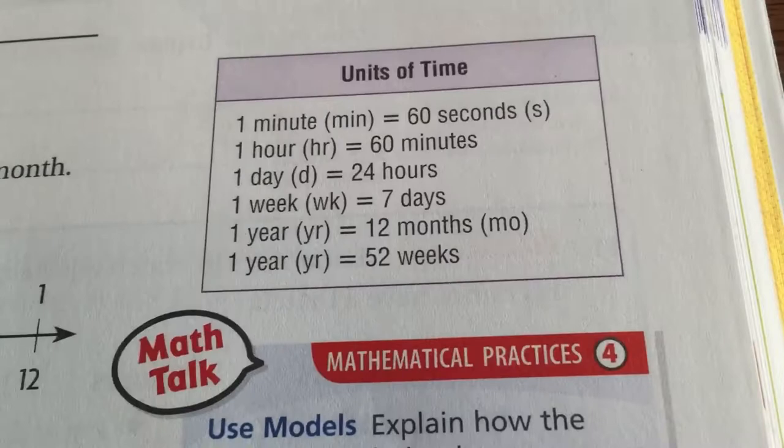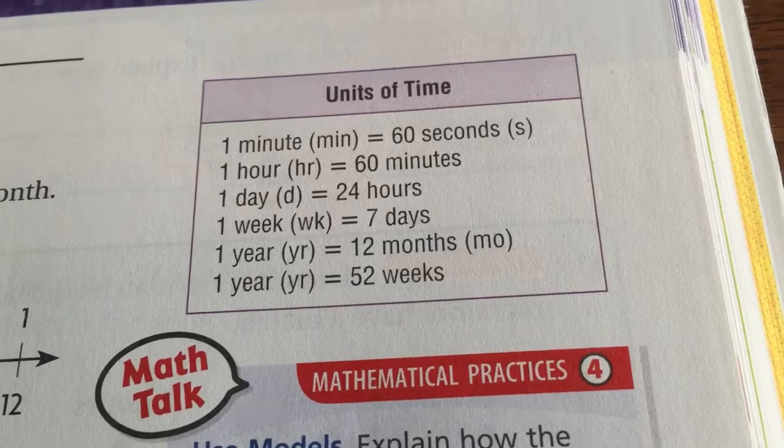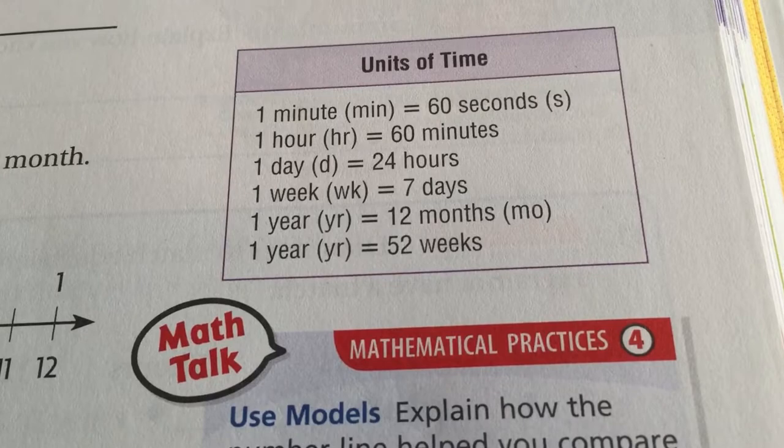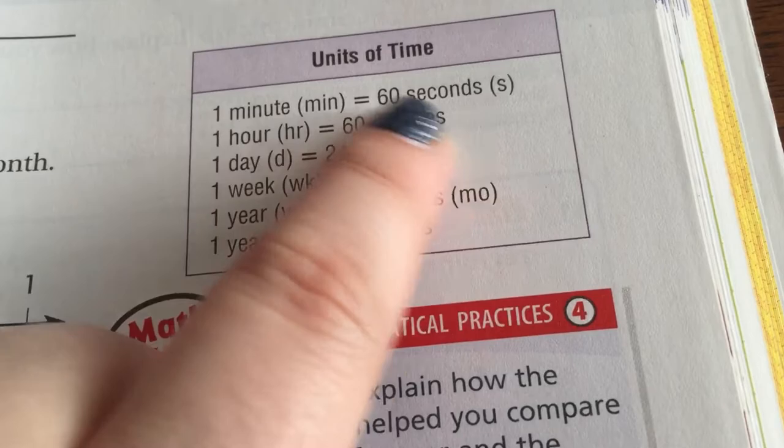Today they give you all the conversions. These are conversions you really should just know to survive life on this planet — you need to memorize these. Most of these you should know already. The only one that is sometimes hard to memorize is 52 weeks in a year. But you should know: 12 months in a year, 7 days in a week, 24 hours in a day, 60 minutes in an hour, and 60 seconds in one minute. They're there for you in case you need that reference.